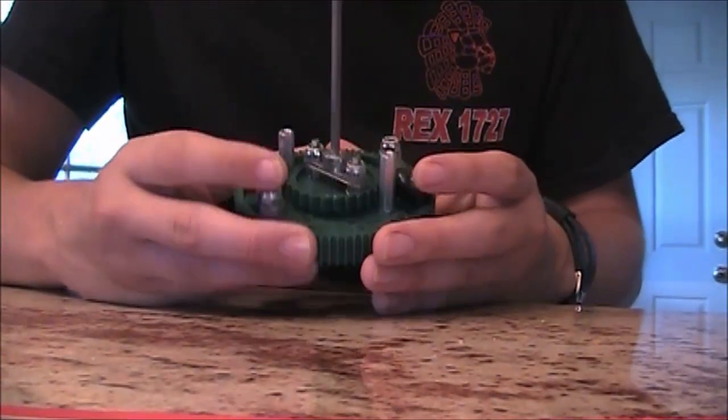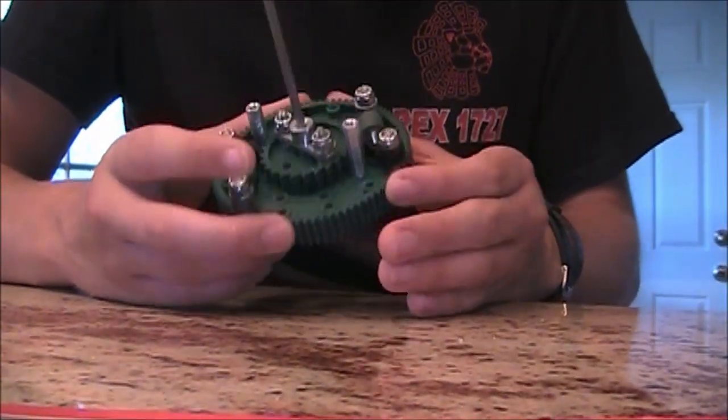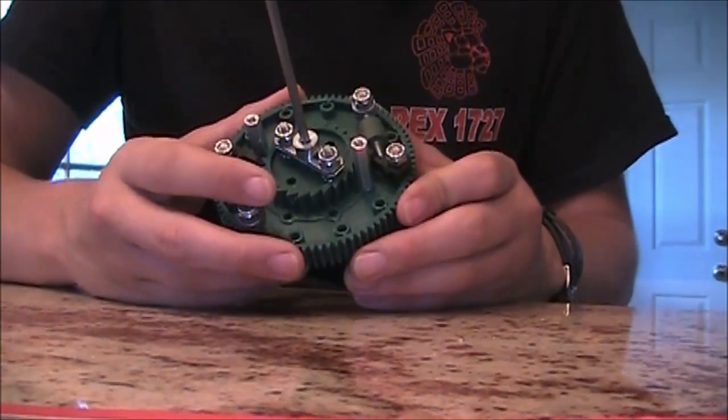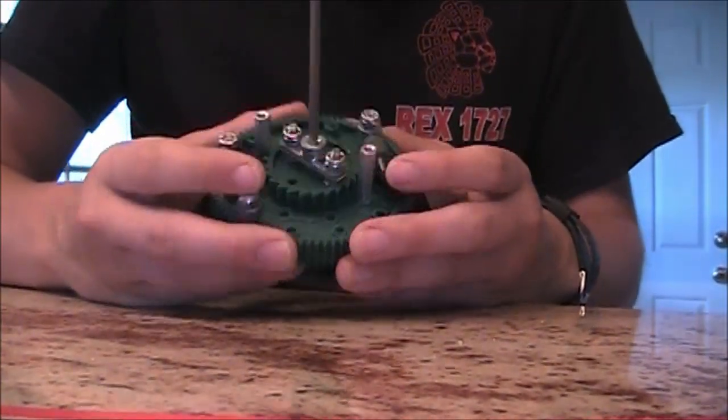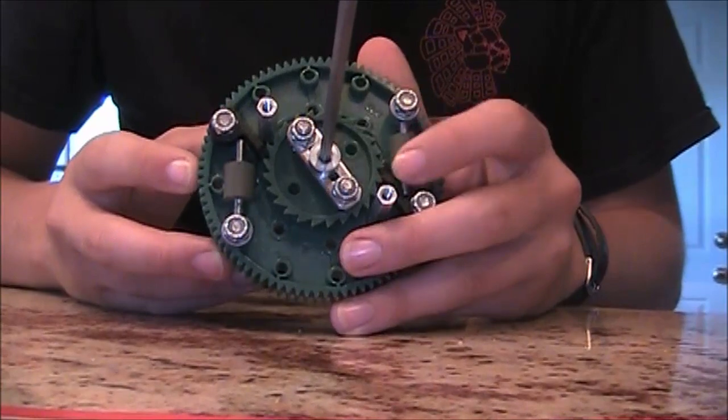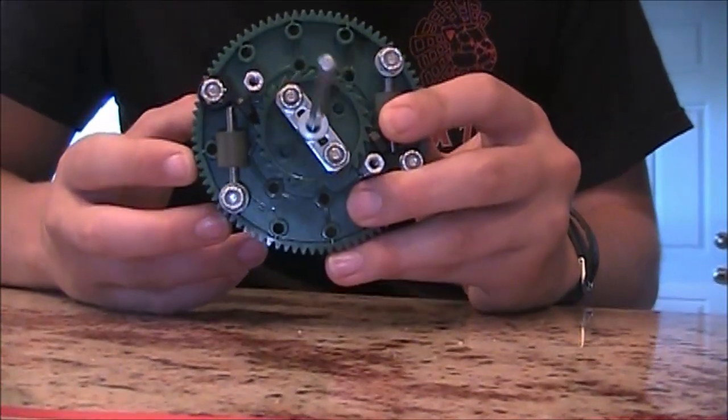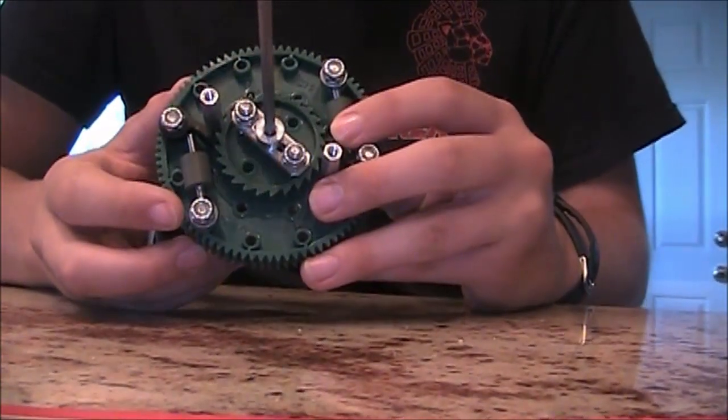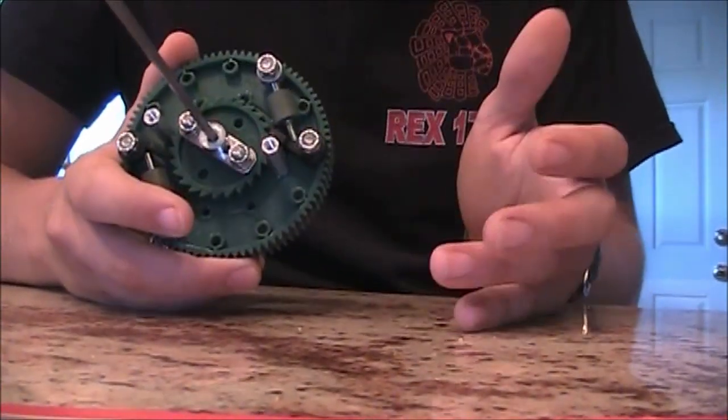The ratchet is constructed on top of an 84 tooth high strength gear. The reason we decided to construct it atop the gear as opposed to the flywheel is the gear has holes already in it, which makes mounting and building on top of it a lot easier. That way we don't have to drill in or modify any of our wheels.